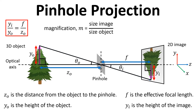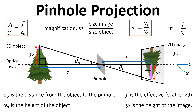Magnification is defined as the size of the image divided by the size of the object. Since the size of the image is y_i and the size of the object is y_o, we get m equals y_i divided by y_o. And because we know y_i divided by y_o equals f over z_o, we have a final equation: m equals f over z_o — the effective focal length divided by the distance from the object to the pinhole. These equations are really useful when describing pinhole projection and carrying out calculations.